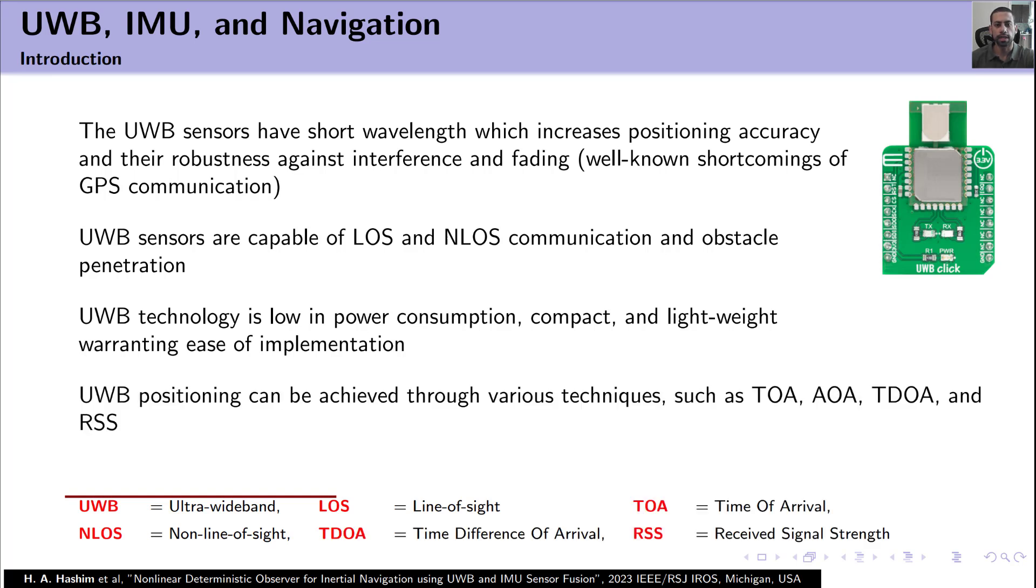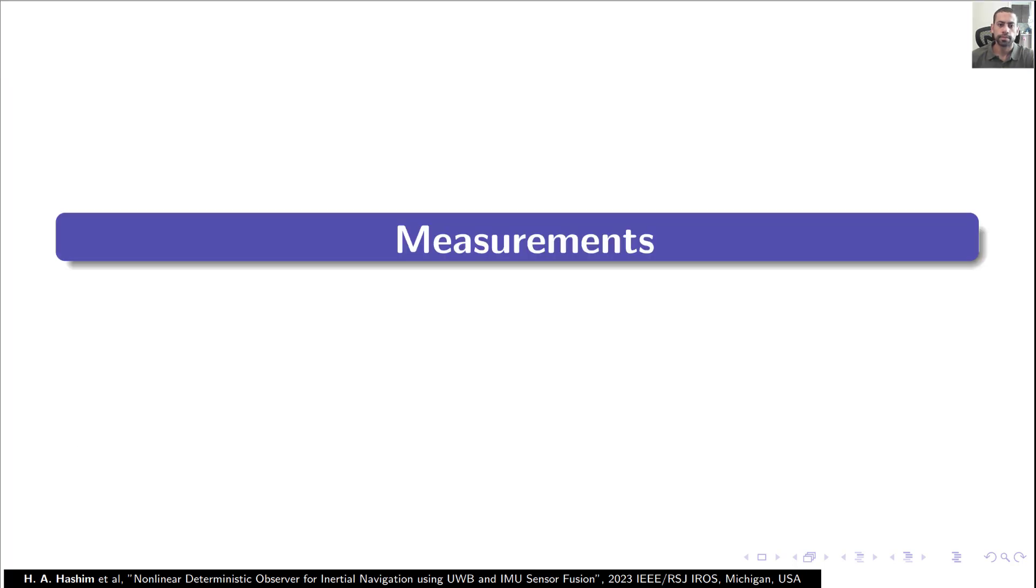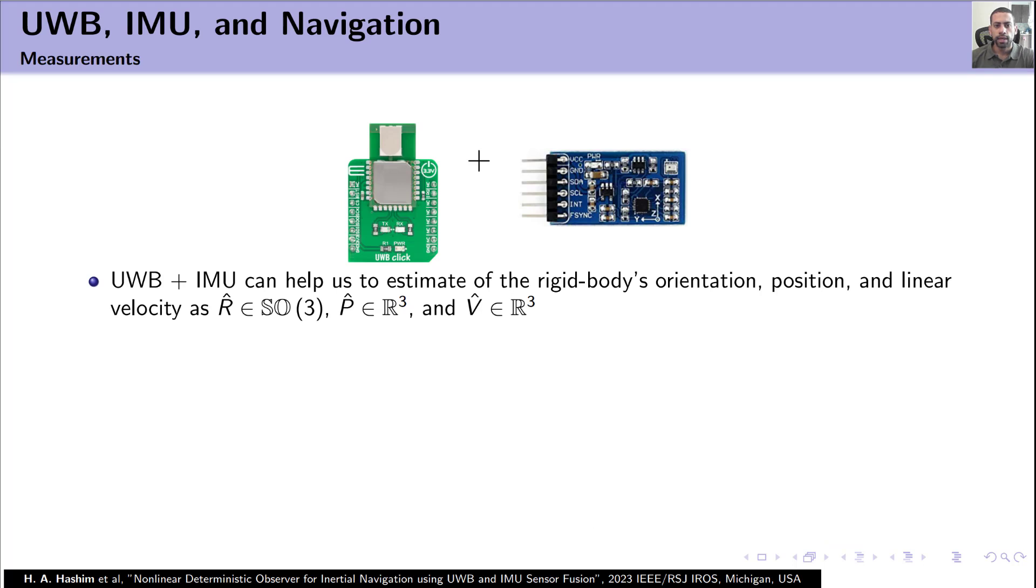UWB positioning can be achieved through various techniques such as time of arrival, angle of arrival, time difference of arrival, and received signal strength. But in this work, we focus on time difference of arrival because it's more practical. UWB plus IMU can help us to estimate the rigid body's orientation, position, and linear velocity, where R hat is the estimate of the vehicle orientation, P hat is the estimate of vehicle position, and V hat is the estimate of vehicle linear velocity.